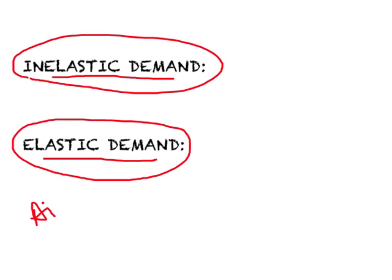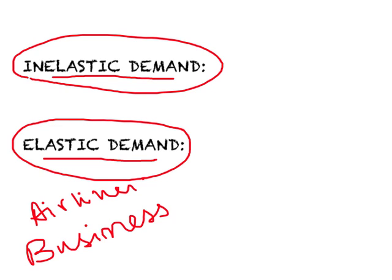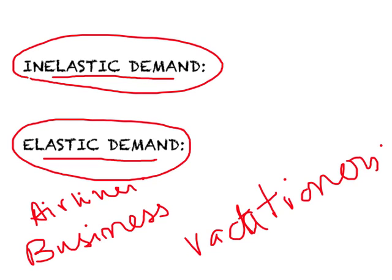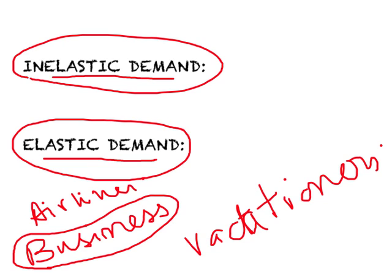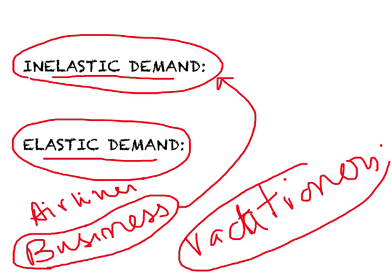Consider the airlines industry. They have divided their customers into two parts: business travelers and vacationers. Business travelers have to travel when they need to, usually at very short notice, and hence we are likely to find inelastic demand for them. Vacationers, on the other hand, can shop around and have time on their side, so they are likely to have elastic demand.